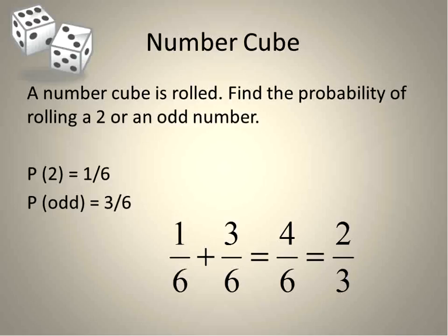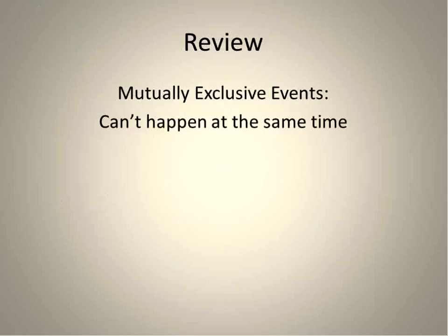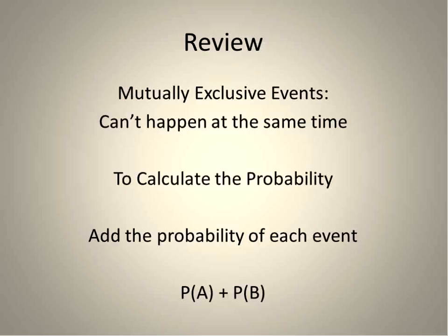And I reduce my fraction to lowest terms, giving me 2 out of 3. So the probability of rolling a 2 or an odd number is 2 out of 3 or two thirds. So that's the basics of mutually exclusive events. Remember that they are events that cannot happen at the same time. And you calculate them by adding the probability of both events together. Hope that was helpful for you and have a wonderful day.